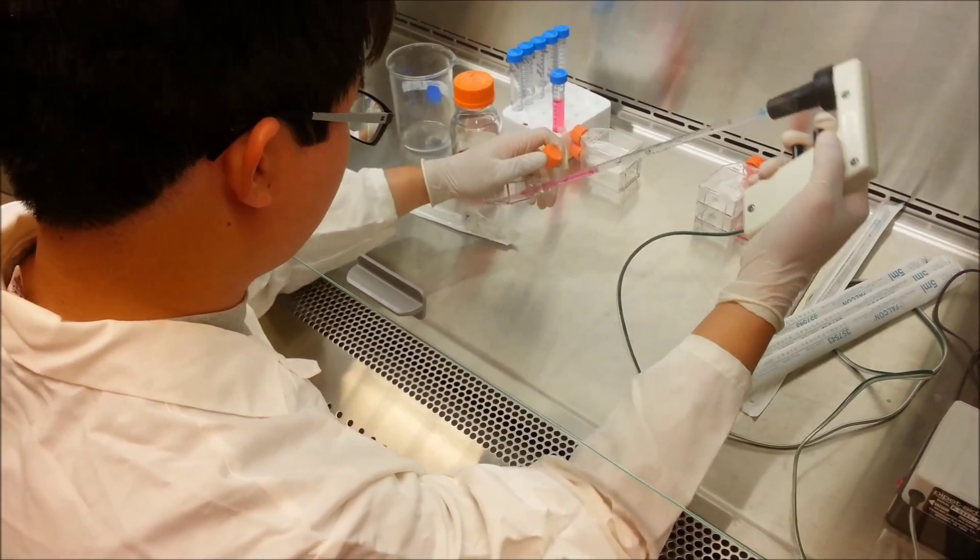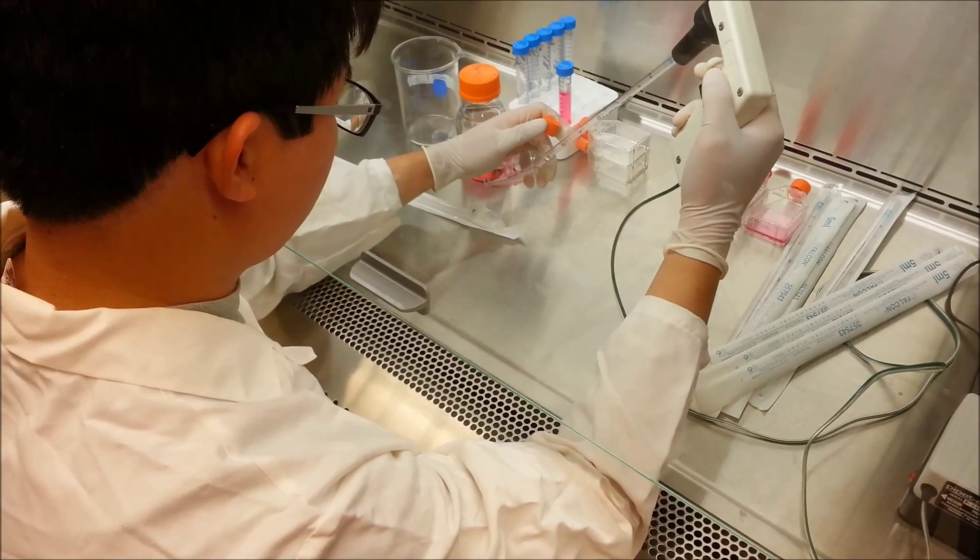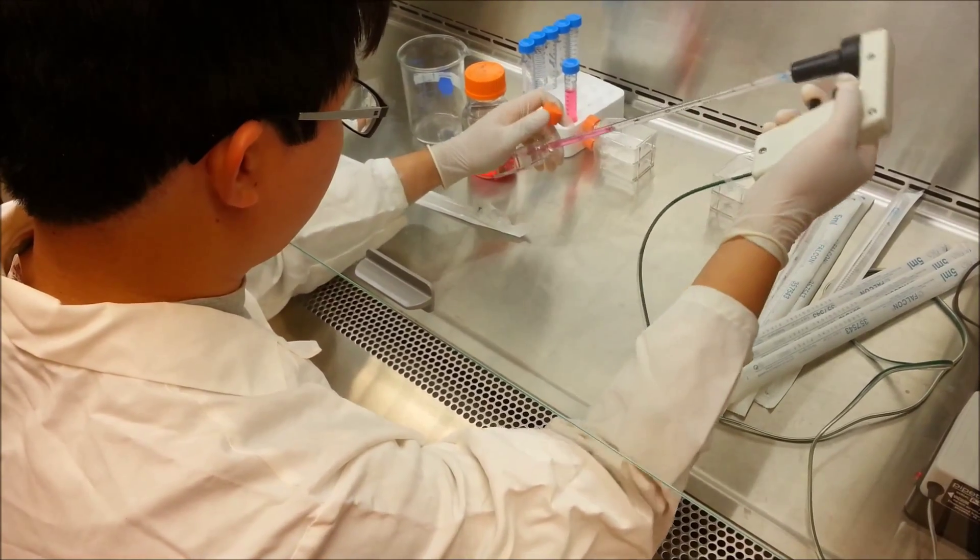Next, using a 5 mL serological pipette, take up the cells and wash the wall of the flasks where they were growing.